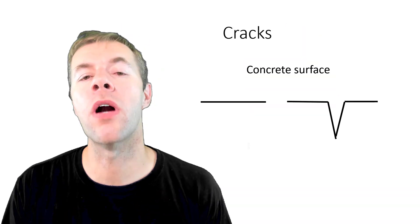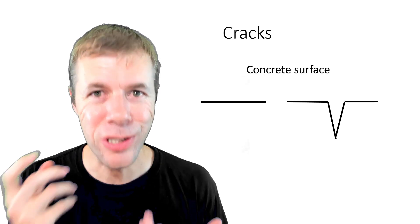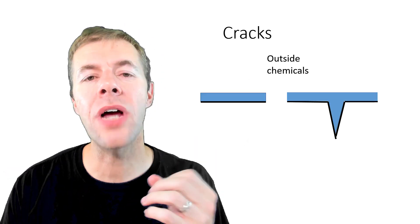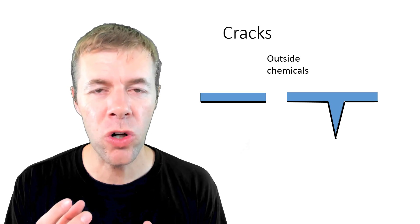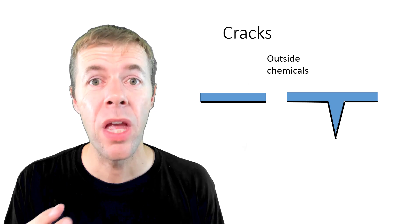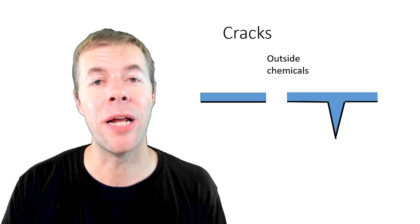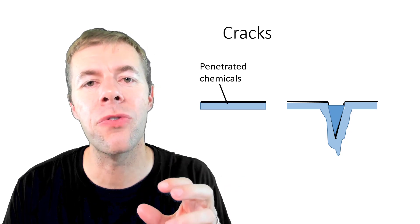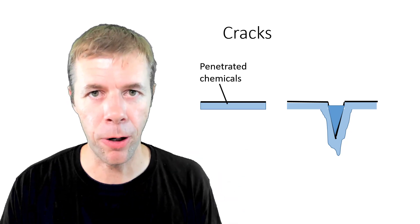I've got two surfaces, one on the left and one on the right. The one on the right's got a big crack in it. Why this is a big deal is when outside chemicals hit the surface of the concrete, this may be de-icing salts or ocean water, they'll actually start to penetrate. And the one on the left will just penetrate at the surface. But where the crack is, it'll penetrate much deeper.